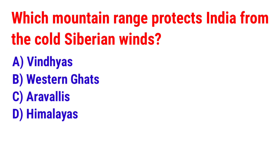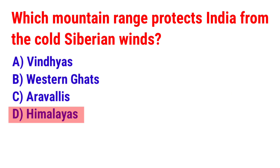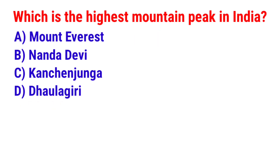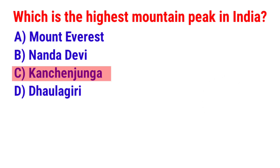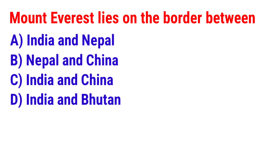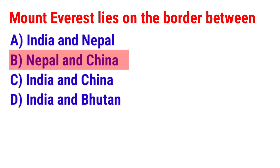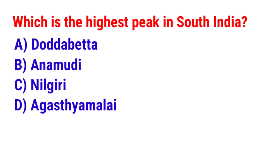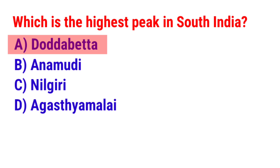Question 14: Which mountain range protects India from the cold Siberian winds? The answer is option D — Himalayas. Question 15: What is the highest mountain peak in India? The answer is option C — Kanchenjunga. Question 16: Mount Everest lies on the border between? The answer is option B — Nepal and China. Question 17: Which is the highest peak in South India? The answer is option B — Anamudi.